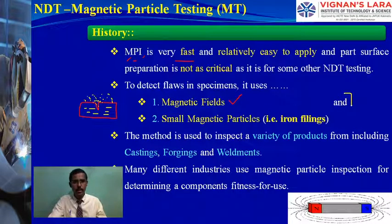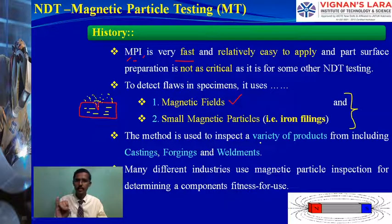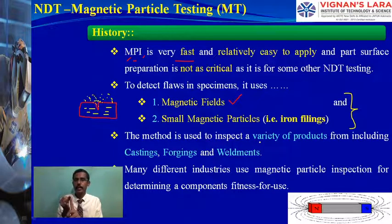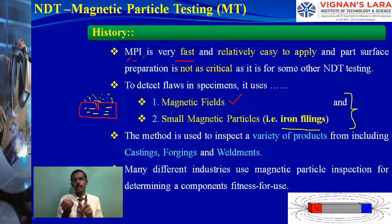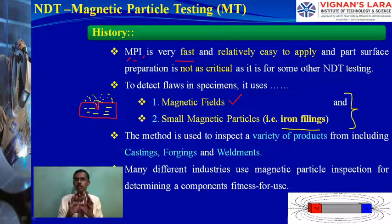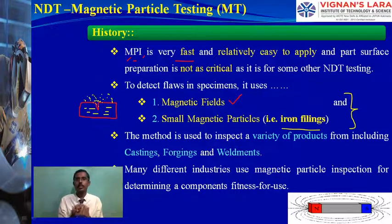Two things are needed for magnetic particle inspection: one, field-creating equipment such as probes, yokes, or current-supplying equipment; and two, small magnetic particles such as iron filings — applied either as wet particle (liquid spray) or dry powder methods. Portable and small equipment is available nowadays.